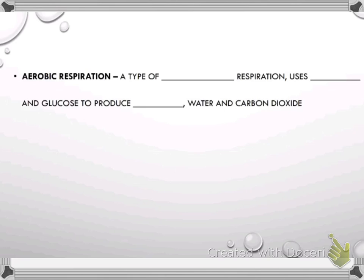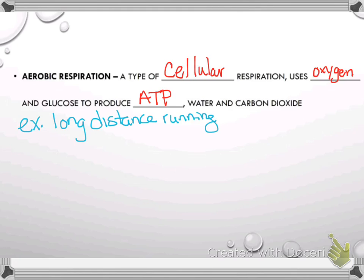All right, now we're going to talk about a different, well, an example of cellular respiration. Okay? We're going to talk about aerobic respiration. An aerobic respiration is a type of cellular respiration which uses oxygen and glucose to produce ATP, water and carbon dioxide. Examples of aerobic exercise would be when you go for a long distance run. Every day during cross country when my team would run four to six miles, that's an aerobic exercise. They're running long distance, and they're using oxygen, and it's going through the process of cellular respiration. Oh,